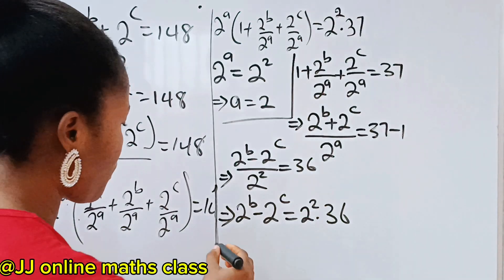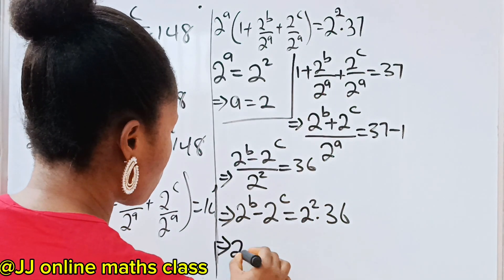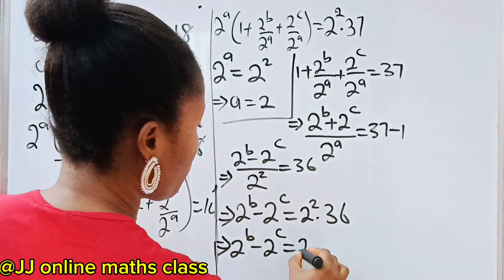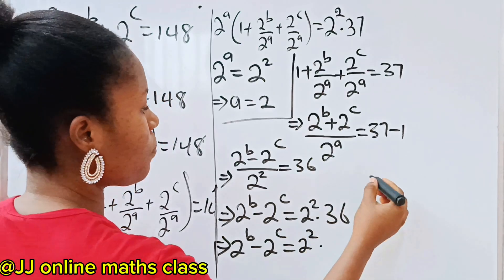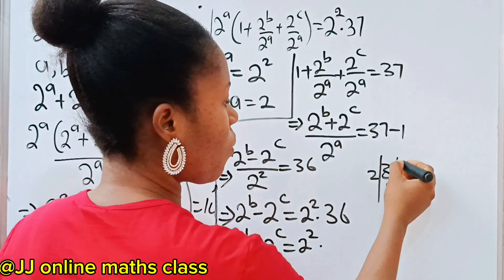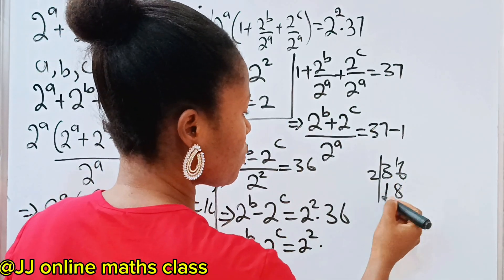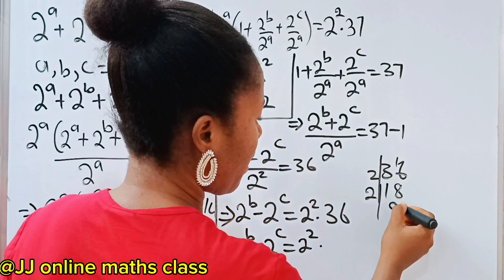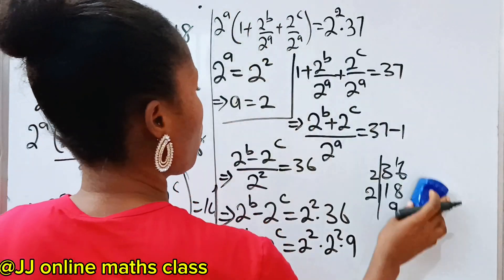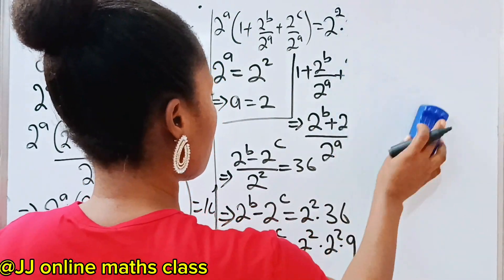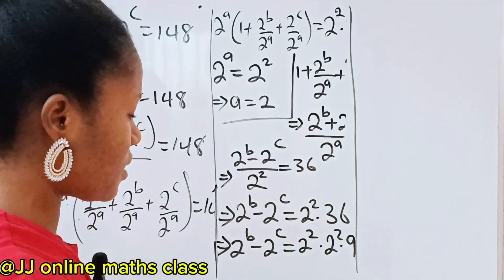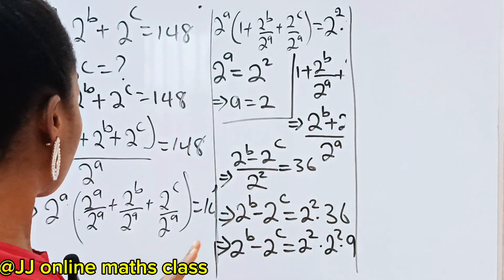So we can write that 2 to the power of B plus 2 to the power of C is equal to 2 to the power of 2 multiplied by 36. Let's factorize 36 further: 2 divides 36 to give 18, then 2 divides 18 to give 9. So we are going to have 2 to the power of 2 times 2 to the power of 2 times 9, which gives 2 to the power of 4 times 9. We will now repeat exactly the same process we did on the first side.